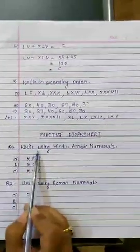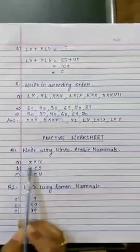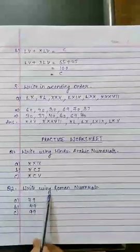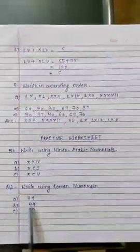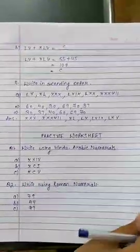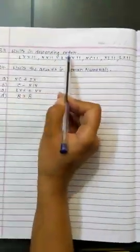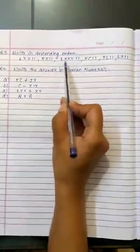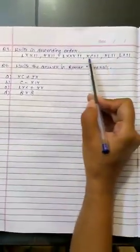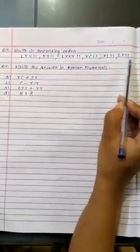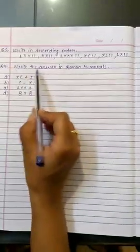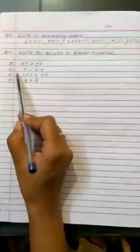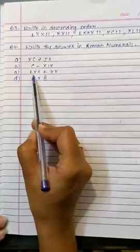Practice worksheet. Question number 1: Write using Hindu Arabic numeral. A part XXIX, B part XCI, C part XCV. Question number 2: Write using Roman numeral. A part 79, B part 44, C is 99. Question number 3: Write in descending order. LXXXII, XXII, LXXXII, XCI, XLII, LXII. Question number 4: Write the answer in Roman numeral. Solve these questions. A part XC plus IX, B part C minus XIX, C part LXX plus XX, D part 8 into 8.